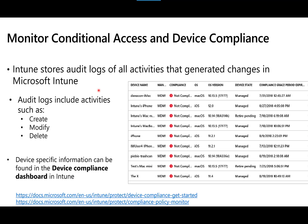Since device compliance is a big part of conditional access, it's important to track when a device has fallen out of compliance and why. To see that information, you can review the device compliance dashboard located in Intune. It shows the device's current compliance state, and if you drill down, it shows which specific setting is out of compliance so you know what to fix.